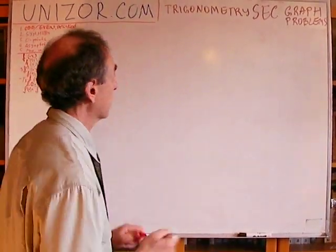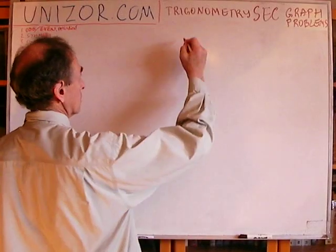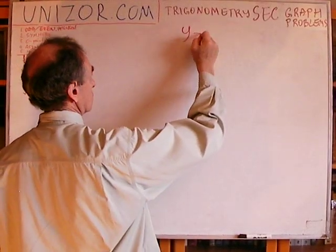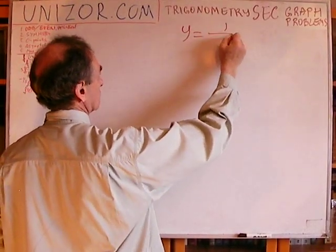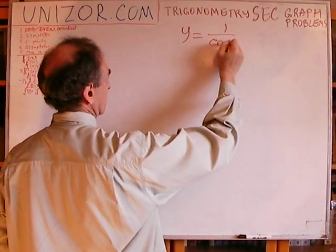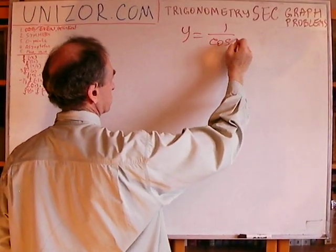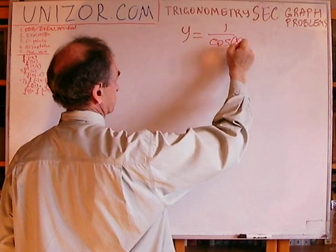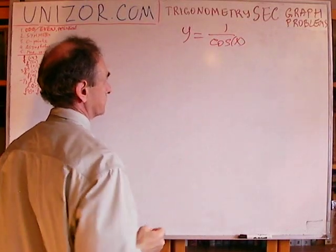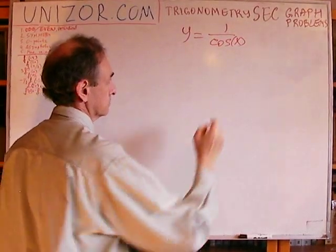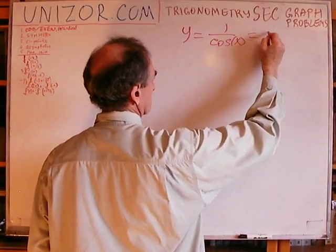Secant is, by definition, 1 over cosine of x. That's secant.